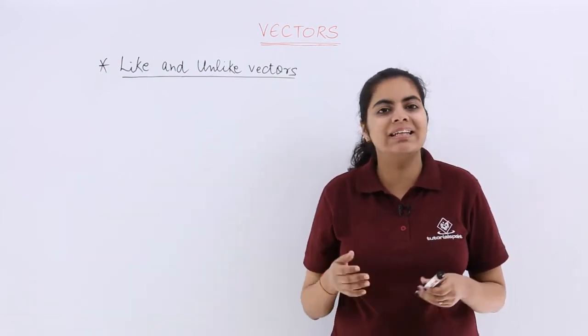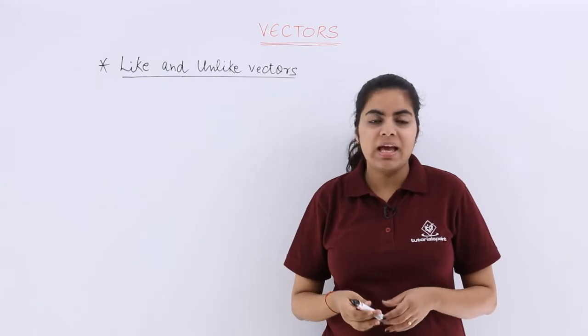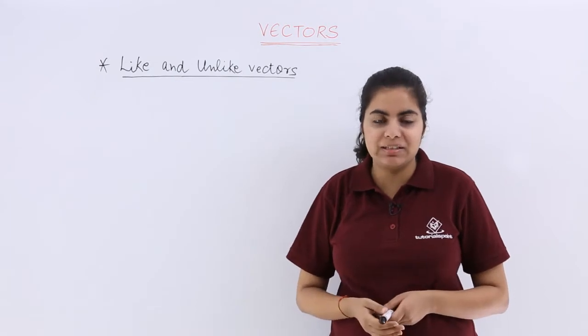Now this is a very interesting category of vectors. They are called like and unlike vectors. As the name suggests, like vectors and the opposite definition would be unlike vectors.